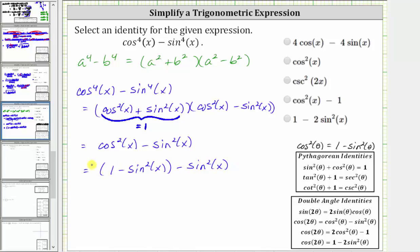Simplifying, we have 1, and -sin^2(x) - sin^2(x) equals -2sin^2(x), giving us 1 - 2sin^2(x).